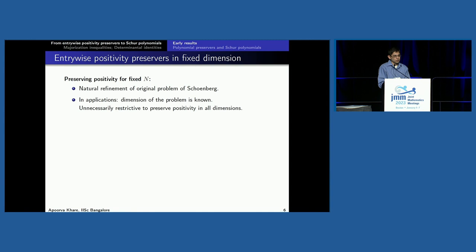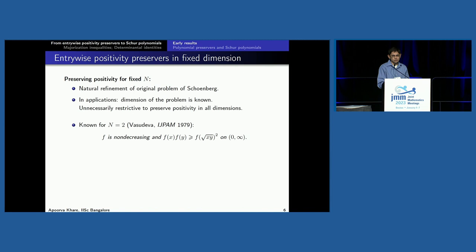The all-dimensions problem is completely solved. What about the fixed dimension problem? For 1×1, these are just any function taking (0,∞) to itself. For 2×2, this was solved — it's a functional inequality and some monotonicity. For 3×3, unfortunately, it is still open. Even now, we don't have a complete understanding of functions that preserve positivity just for 3×3 matrices, let alone anything larger.